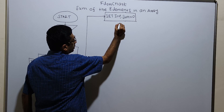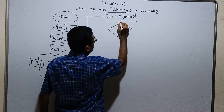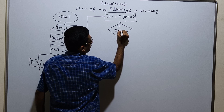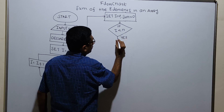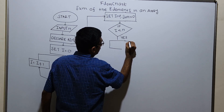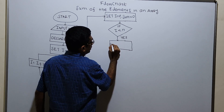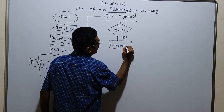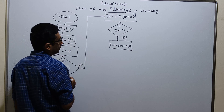Now I am checking a condition. If i less than n is true, I am adding: sum equal to sum plus a of i.